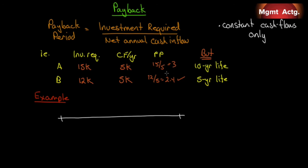Cash flows may end very shortly after we get paid back, but cash flows on another project may continue on and on. Without taking into consideration the time value of money and the present value of all of it, you can make a terrible decision. Project A might have a 10-year life providing $5,000 a year, while Project B only provides $5,000 a year for 5 years. That extra $3,000 investment buys you an extra 5 years at $5,000 a year. Clearly, if we did NPV, the 10-year life would win.